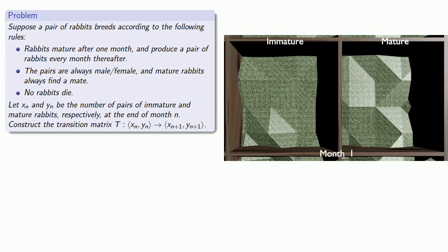Now, it might not be obvious how to do that, so let's run our rabbits through a couple of months. So let's suppose at the start I have one pair of immature rabbits at the end of month 1. I turn my back, so to speak, and at the end of month 2, this pair of immature rabbits has become a pair of mature rabbits.